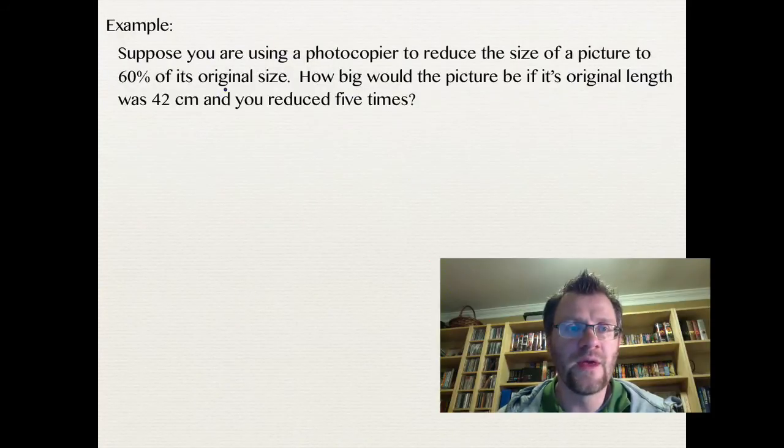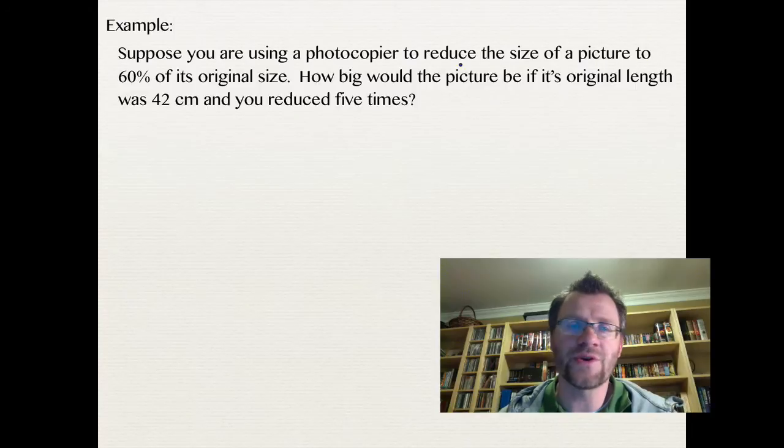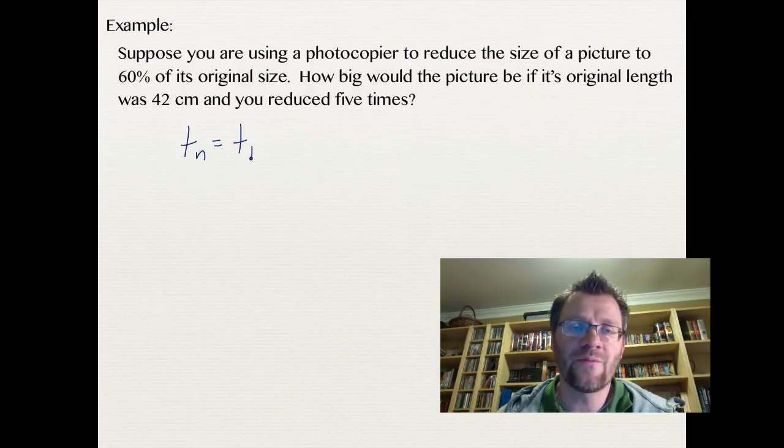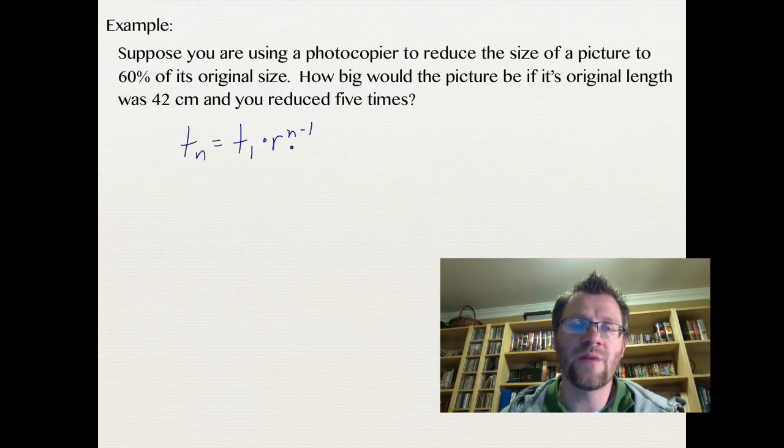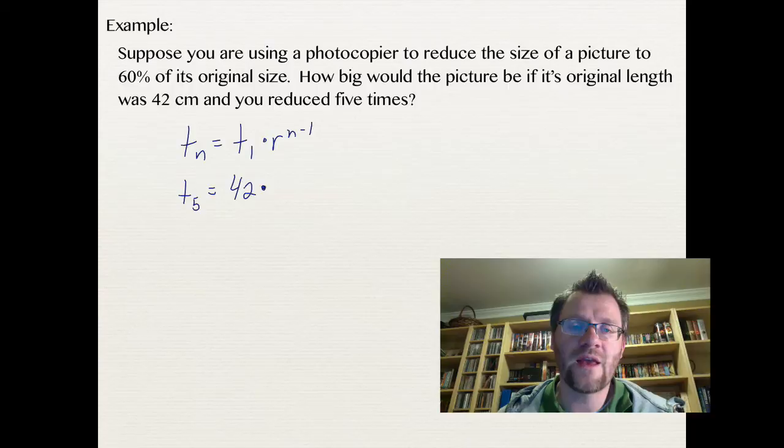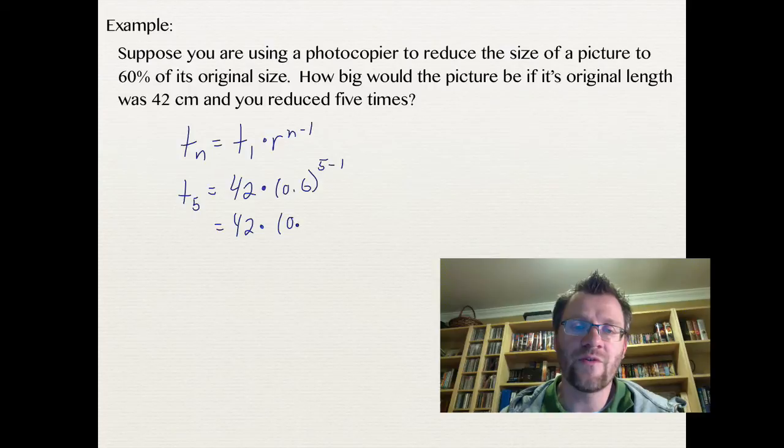So here's our second example. It says, suppose you're using a photocopier to reduce the size of a picture to 60% of its original size. How big would the picture be if its original length was 42 centimeters, and you reduced it 5 times. So we have our TN formula for geometric sequences, and that is TN equals T1 times R to the power of N minus 1. We're talking about the fifth reduction, so it'll be the fifth term. It started off as 42 centimeters, and every time you take 60% of it, that's like multiplying by 0.6. And we're doing that 5 minus 1 times, so that's 42 times 0.6 to the power of 4.